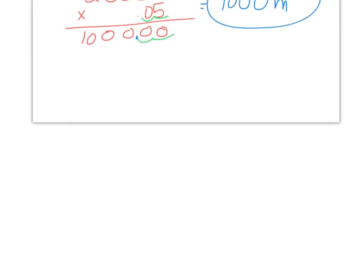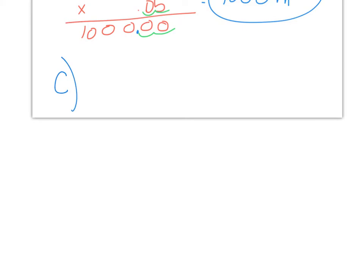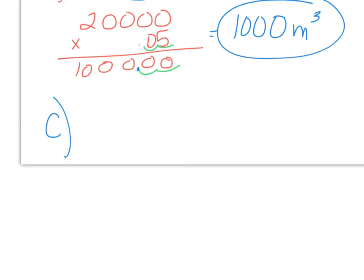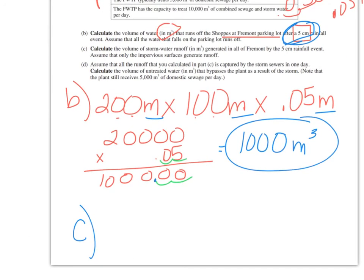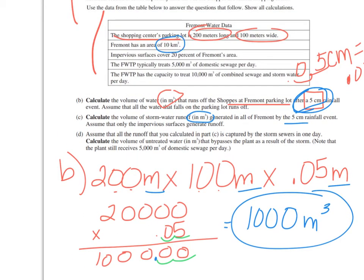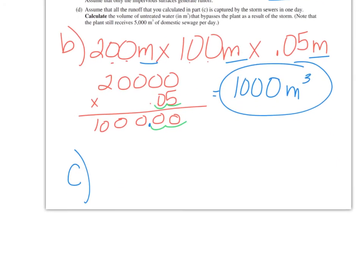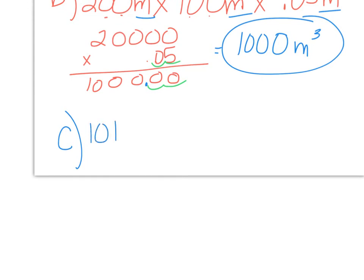All right, going on to C. Calculate the volume of stormwater runoff in meters cubed again generated in all of Fremont by the five-centimeter rainfall event. Assume that only the impervious surfaces generate runoff. So the rest soaks into the ground. So we have stormwater. We want meters cubed again, and it's a five-centimeter event. And it tells us here that we want all of Fremont. So Fremont is 10 kilometers squared, and we want to now get that in meters cubed. So we somehow need to multiply 10 kilometers squared times five centimeters.